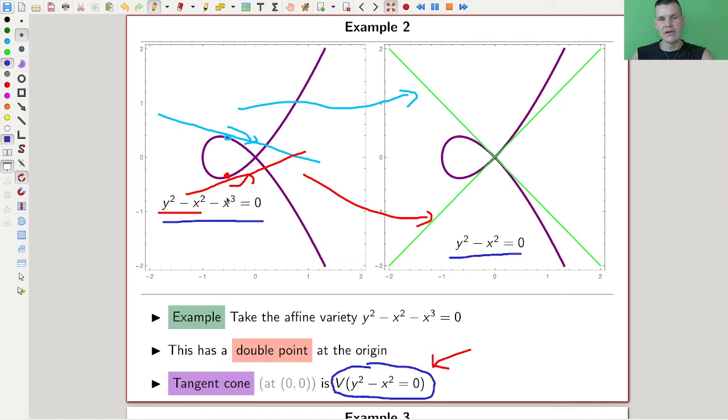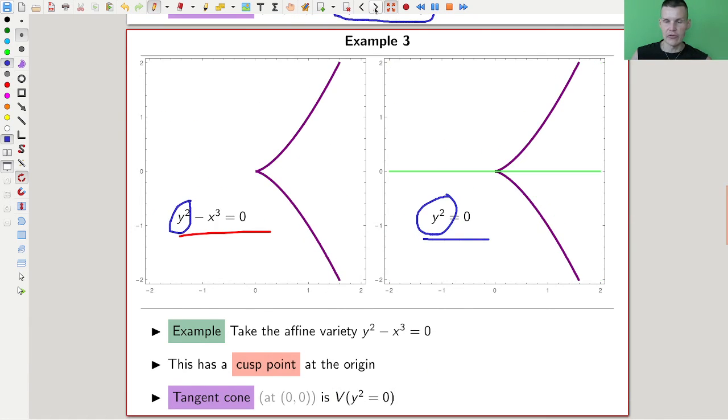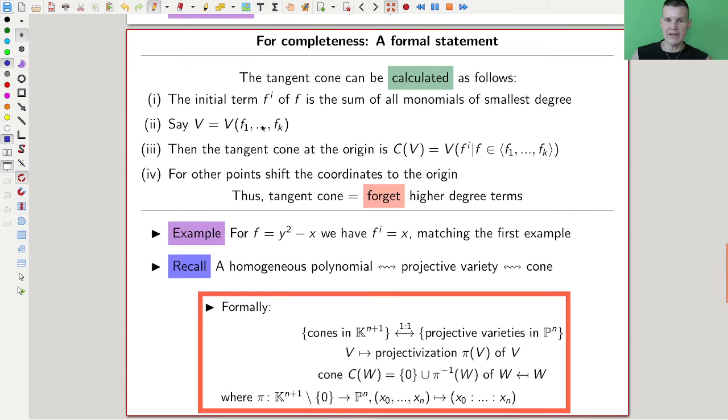Maybe this one is the most obvious - we have degree two, degree two, degree three. So the initial terms are the monomials of lowest degree - it's two and two. You just drop the ones of higher degree. You take the initial term. So if your variety is f1 up to fk, then your cone is just the initial terms of everything in the ideal.